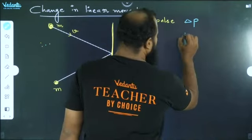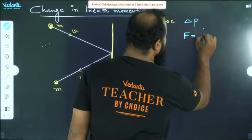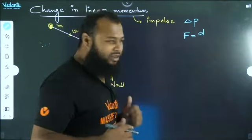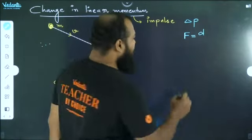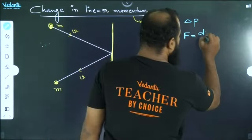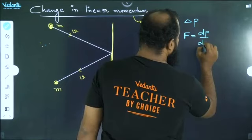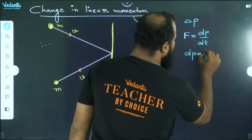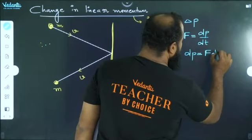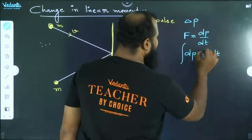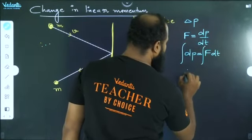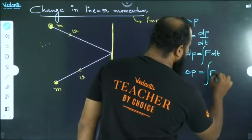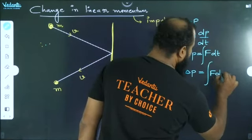F is equal to dp/dt. So F into dt. Let us try to integrate on both sides. Integration of dp would become delta P, and that is nothing but integral F dt.